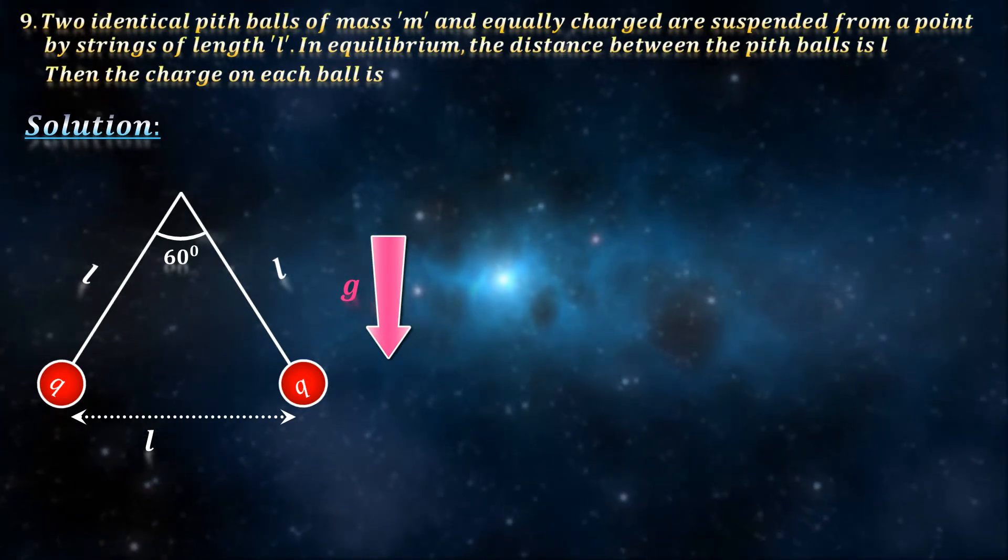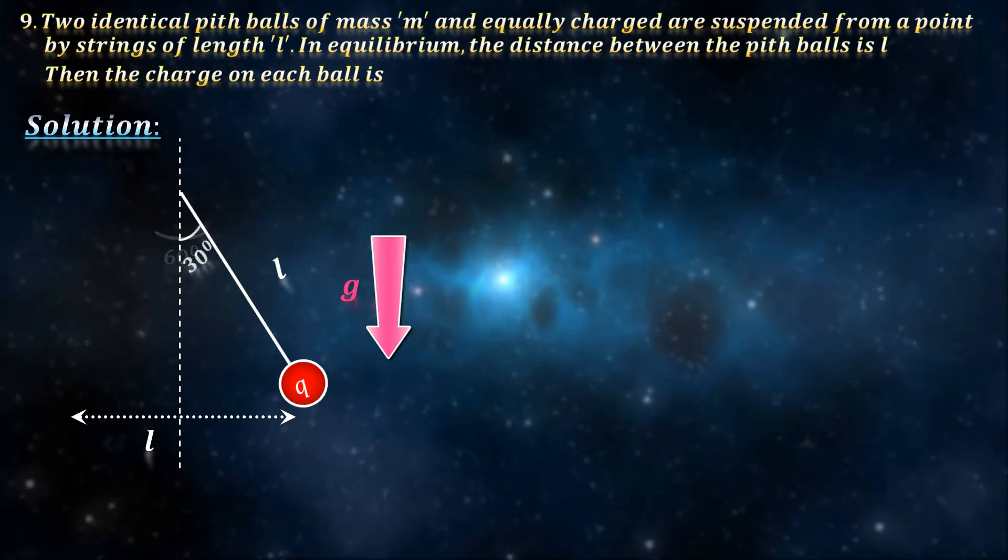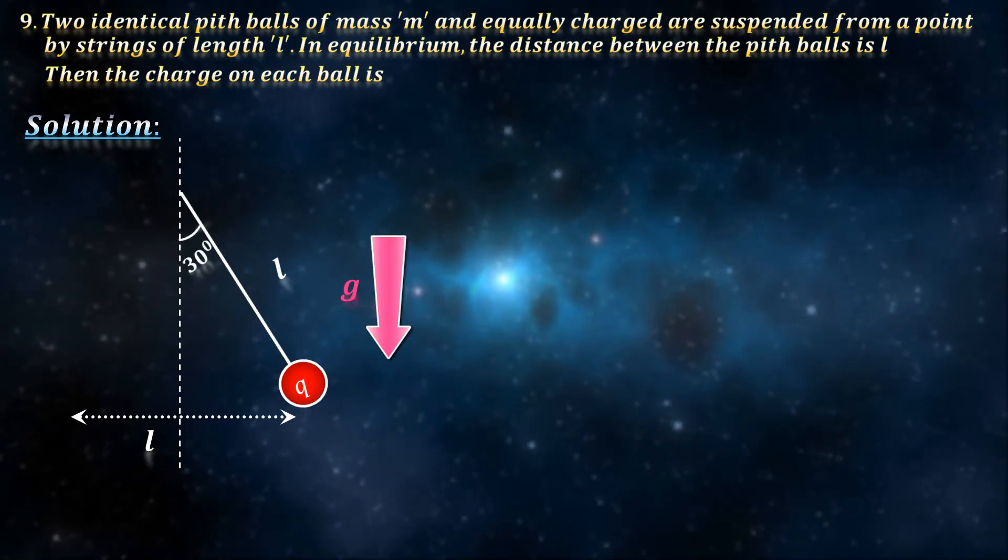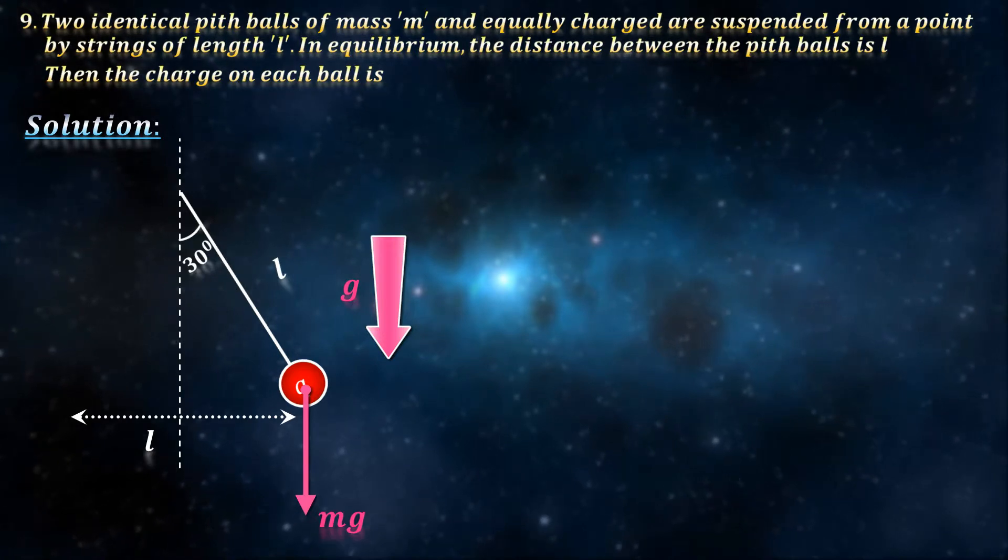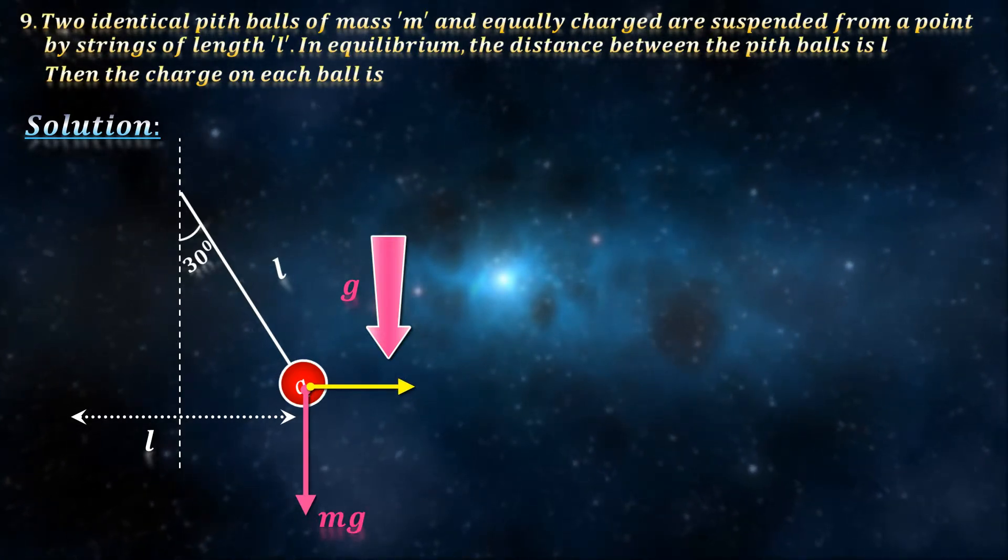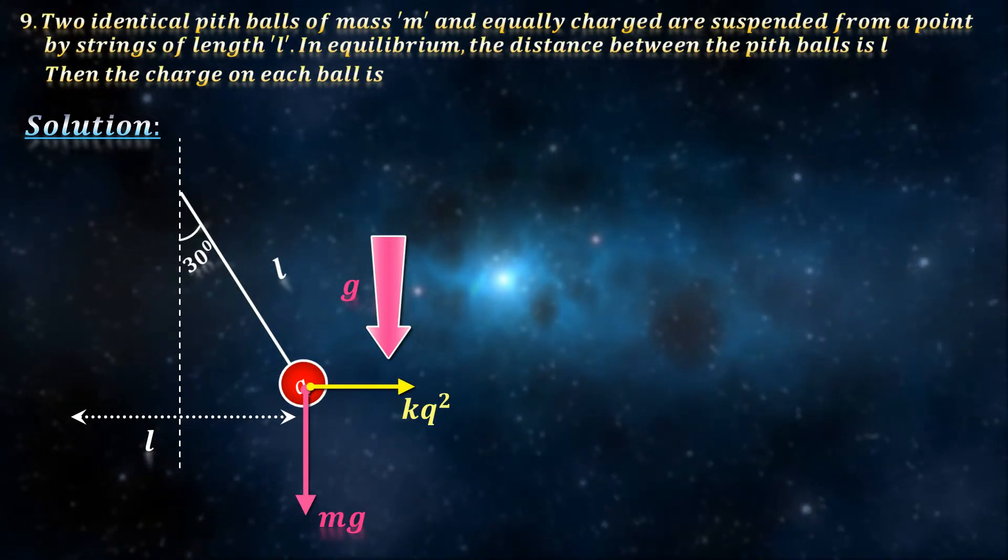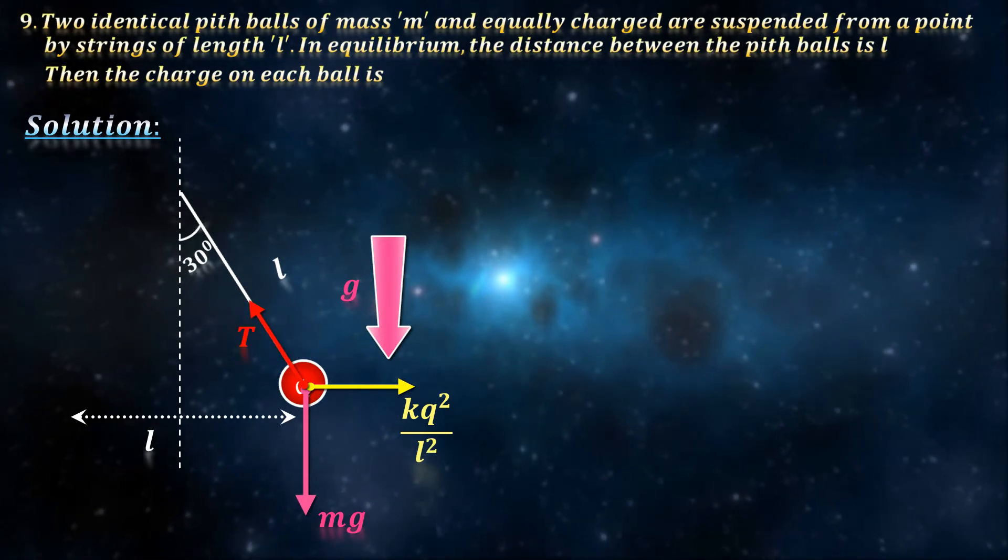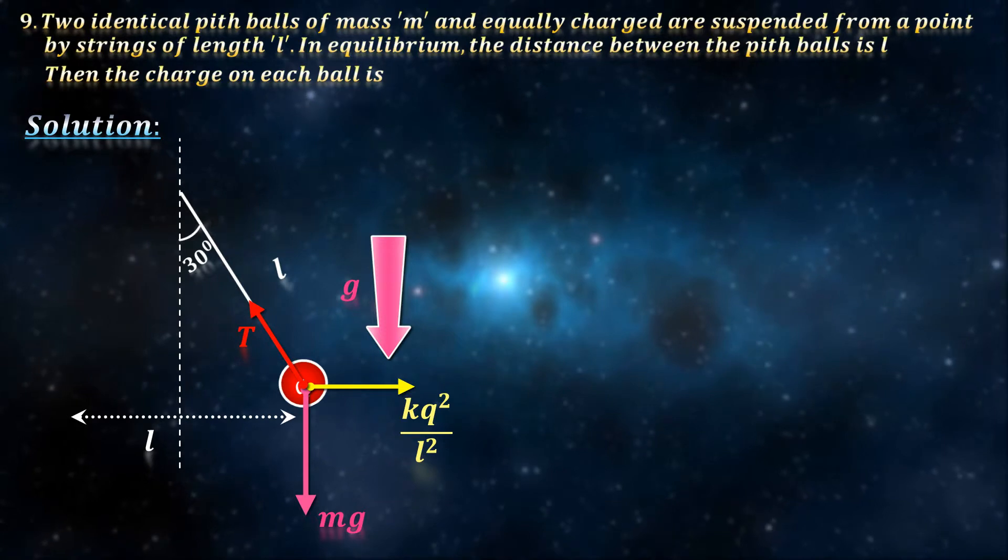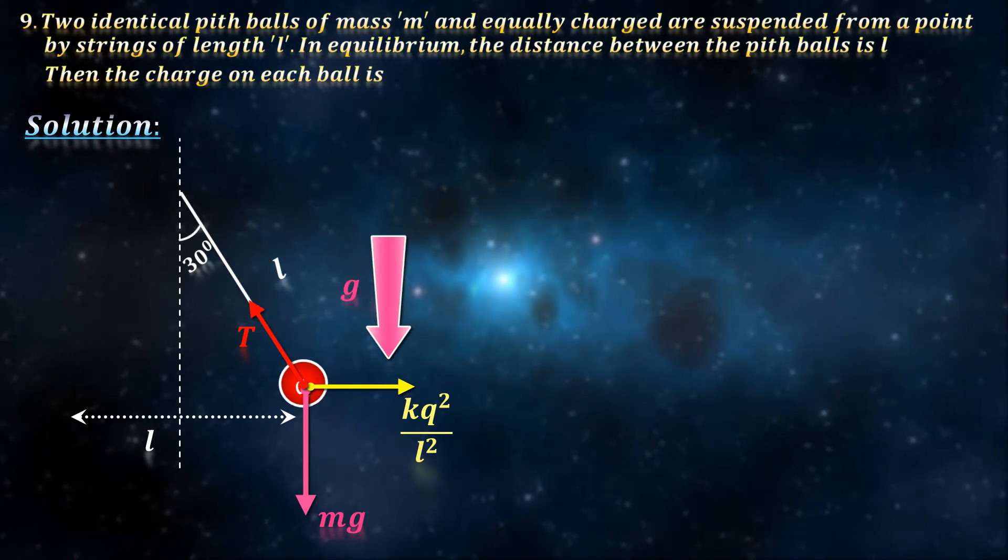To solve this, let's chop this into half. There are three forces acting on the balls. Downward gravity, Mg, leftward Coulomb's repulsion, kq square by L square, and the tension along the string. These three forces must cancel out.